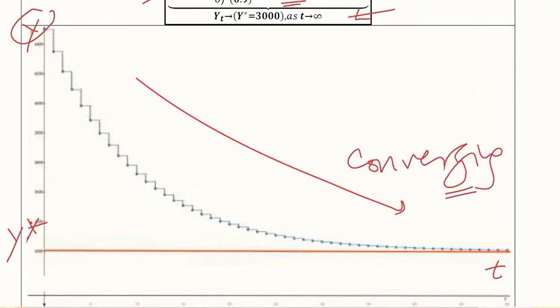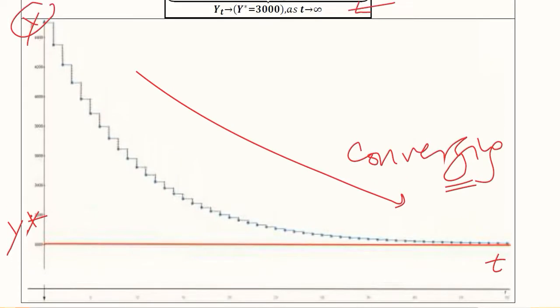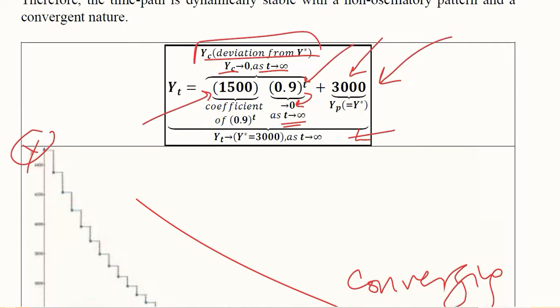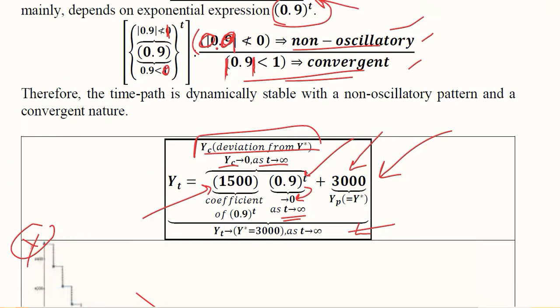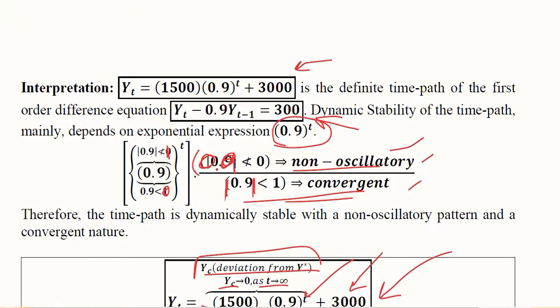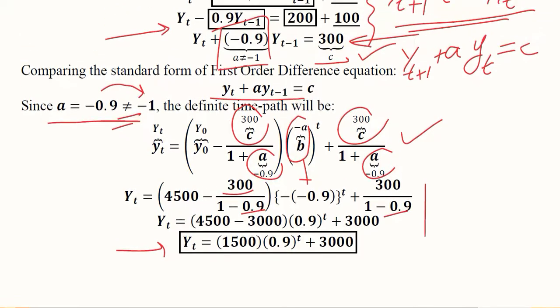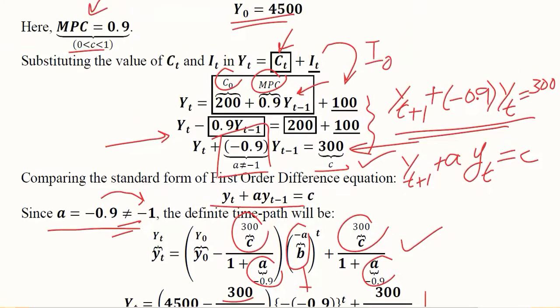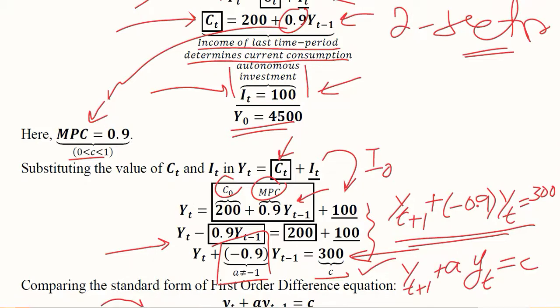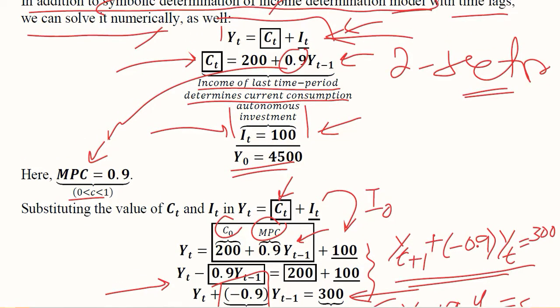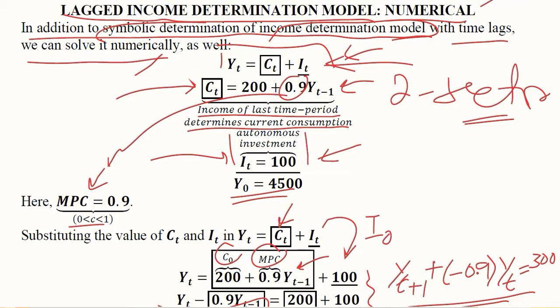In this way we have conducted a numerical analysis with an economic example of the lagged type of version of the national income determination in a two-sector economy. The mathematical tool that we used to make the final result concrete was the first-order difference equation. Thank you.